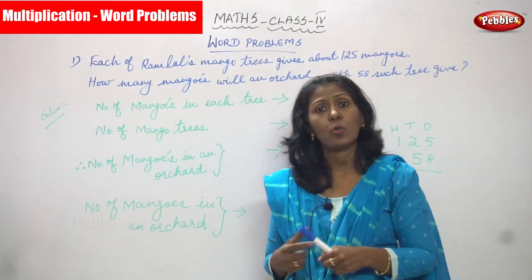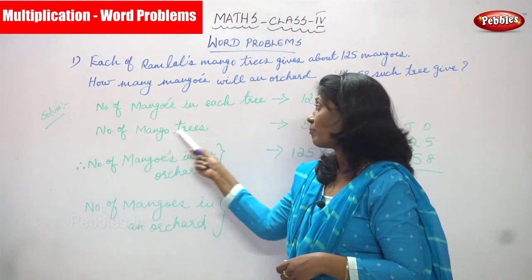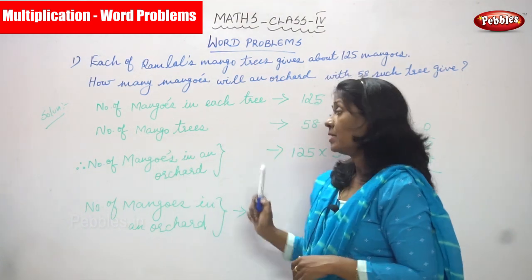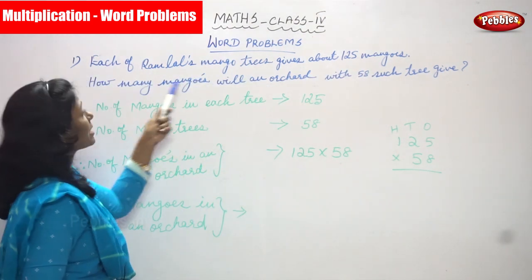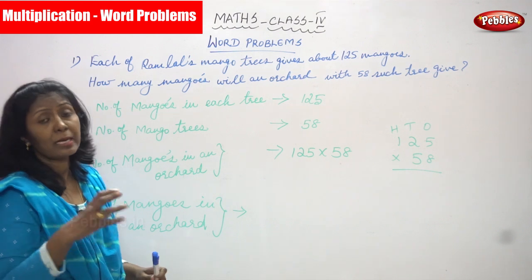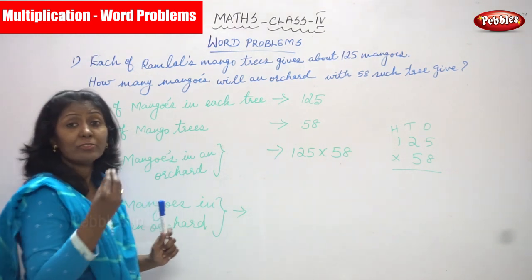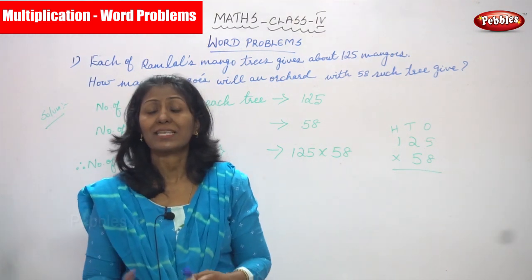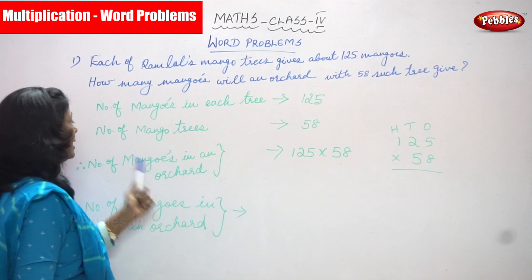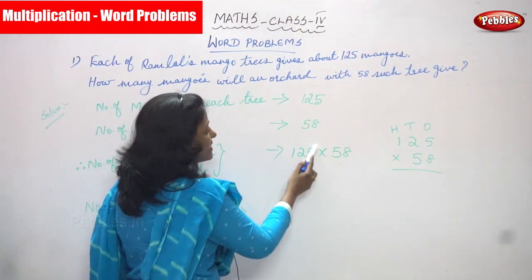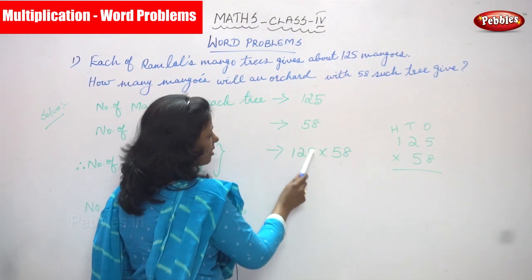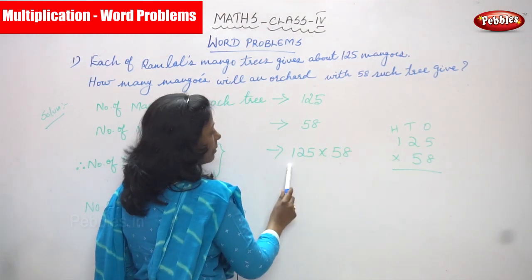Number of mango trees is 58. Number of mango trees in the orchard is 58. Now we are going to find out how many mangoes 58 such trees give — that is the number of mangoes in an orchard. Each mango tree gives 125 mangoes, and there are 58 trees.